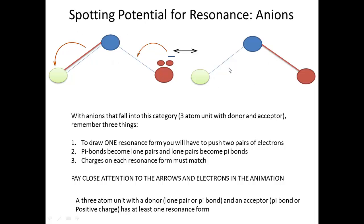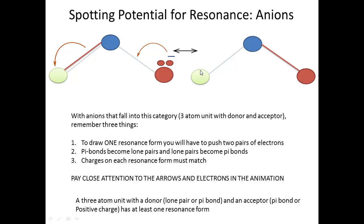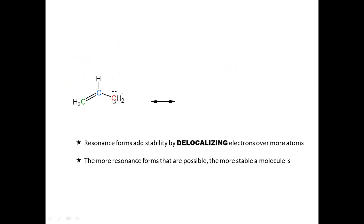If this resonance form is negative, then the resonance form you get must also be negative. This pair of electrons moves here to put a pi bond between those two atoms, and then the pi bond breaks, pushing that pair of electrons onto the adjacent atom. Here's a three-carbon example: all three carbons are adjacent. I push this lone pair between the blue and red carbons to create a new pi bond, and I also have to break the existing pi bond because the middle carbon would otherwise have five bonds.